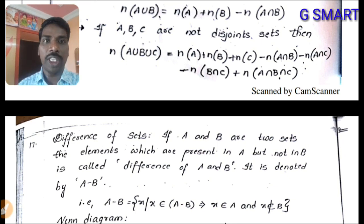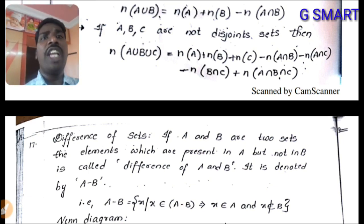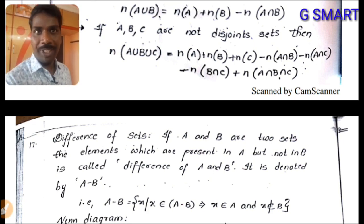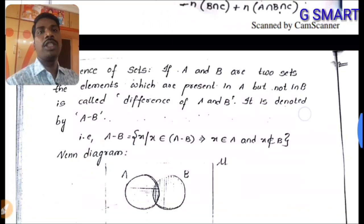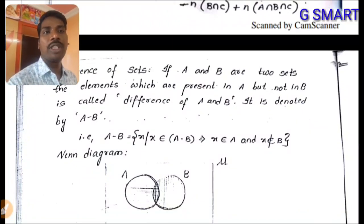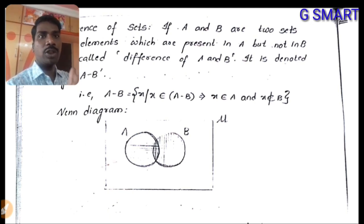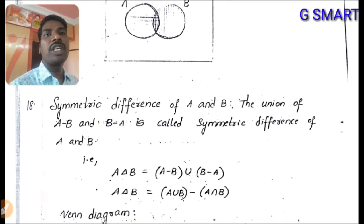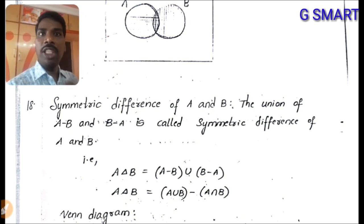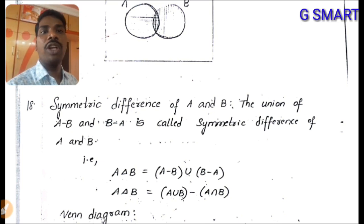Difference of sets: the elements present in A but not in B is called A minus B (A − B). Similarly, B − A contains elements in B but not in A. Symmetric difference: A △ B = (A − B) ∪ (B − A), which can also be written as A △ B = (A ∪ B) − (A ∩ B).